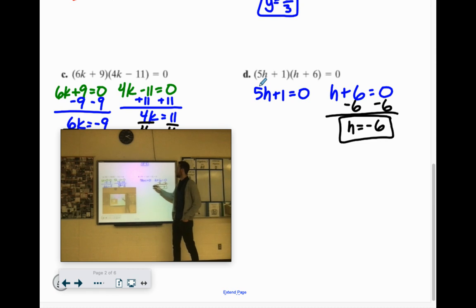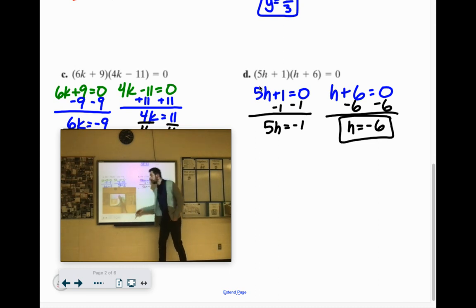Over here, we've got two steps. First, we'll subtract the 1. 5h equals negative 1. Then we'll divide by the 5. And we're done. h equals negative 1 fifths.